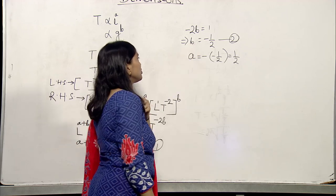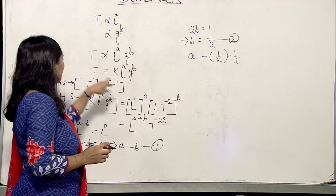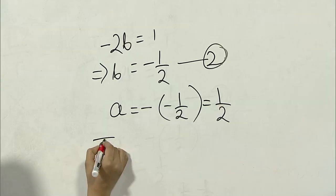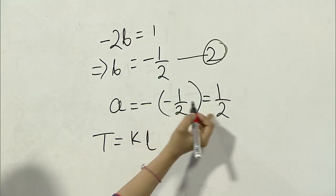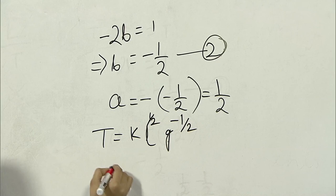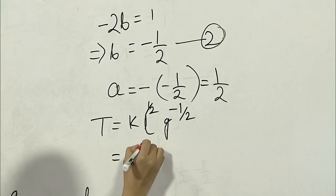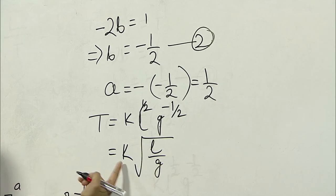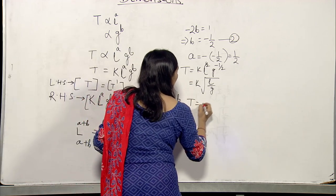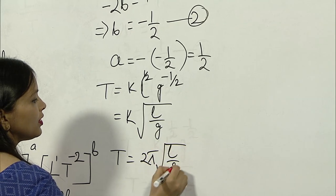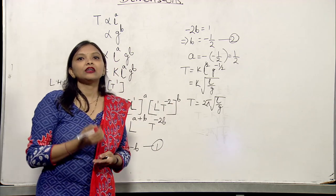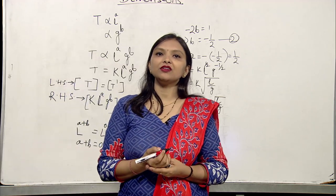We have got the values: a equal to half, b equal to minus half. Now putting this value in T equal to k L to the power a, g to the power b: T equal to k into L to the power half and g to the power minus half. This is equal to k root over of L by g. The value of k has been found from experiment to be equal to 2π. So we can write T equal to 2π root over of L by g. This is the formula for the time period of a simple pendulum.